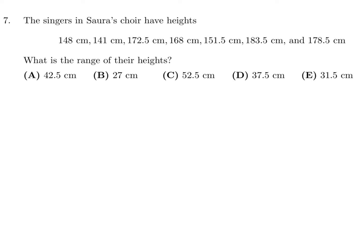Question 7: The singers in Sara's choir have the following heights. What is the range? The range is from the smallest to the largest. The smallest is 141 and the largest is 183.5. To find the range, subtract: 183.5 − 141 = 42.5. That's the range, so the answer is A for number 7.